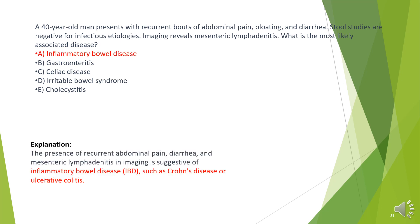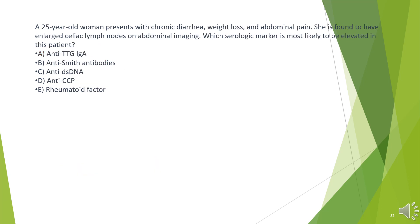The answer is A. Inflammatory bowel disease. The presence of recurrent abdominal pain, diarrhea, and mesenteric lymphadenitis on imaging is suggestive of inflammatory bowel disease (IBD), such as Crohn's disease or ulcerative colitis.